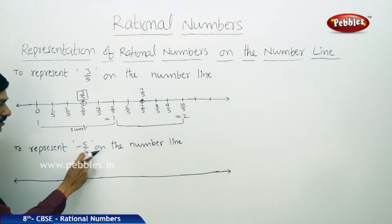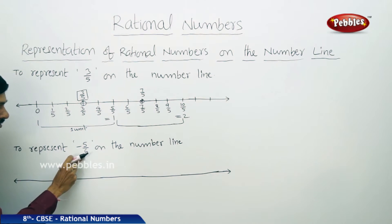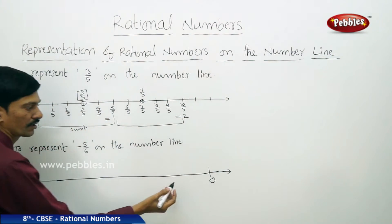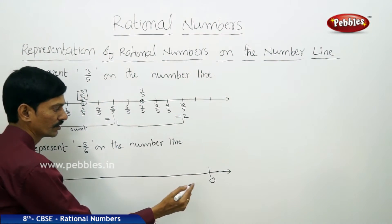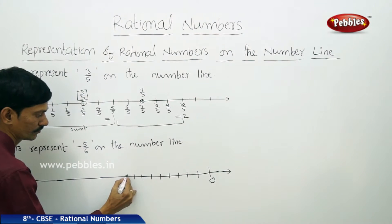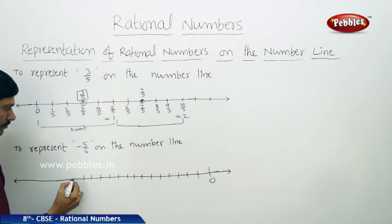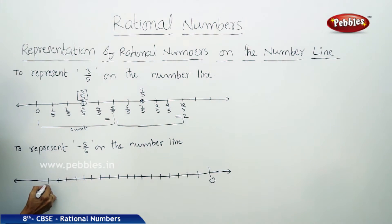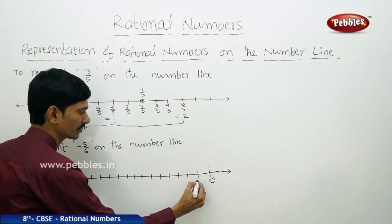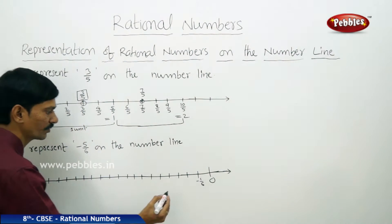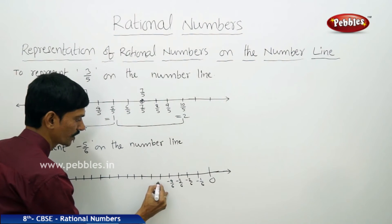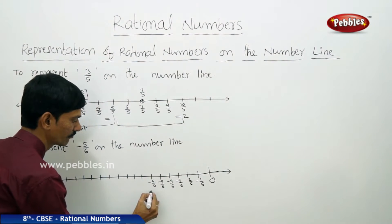Next, represent minus 5 by 6 on the number line. The given rational number is a negative rational number, so I am taking 0 on the right side and all rational numbers to the left of 0. Making equal parts: the first part to the left of 0 is minus 1 by 6, then minus 2 by 6, minus 3 by 6, minus 4 by 6, minus 5 by 6, and minus 6 by 6 which equals minus 1.